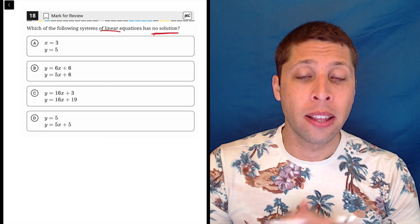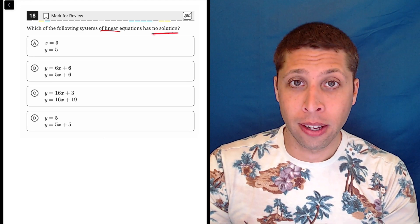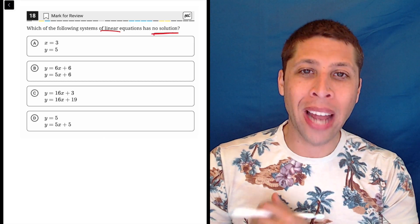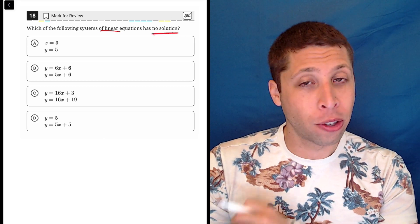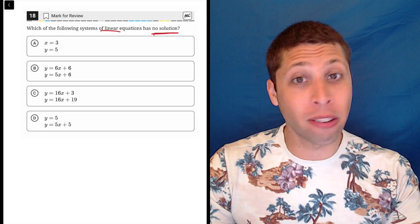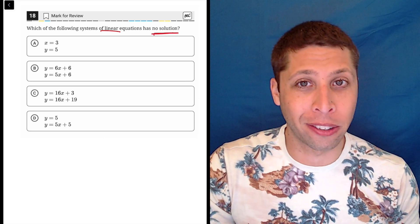No solutions means that if we graphed these lines in Desmos or whatever, we would have no intersection point between the two lines. We could do that, but that's going to be time consuming. I don't have that kind of time. We're at question 18, the clock is ticking.